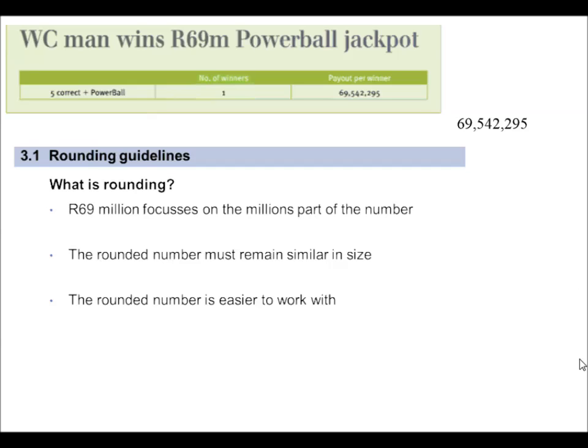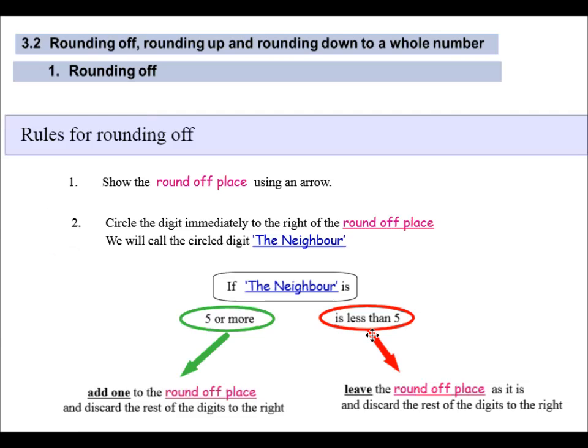What must we remember when rounding? The 69 focuses on the million part of the number, so we're looking at the 69 million. The rounded number must remain similar in size to the original number. Why do we round numbers? Well, it is easier to work with, easier to read, easier to understand, and it also takes up less space, for example, in the headline.